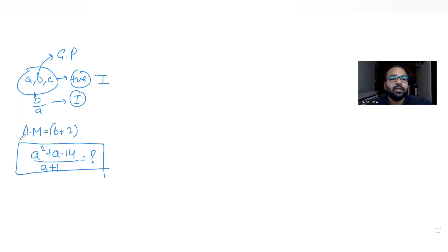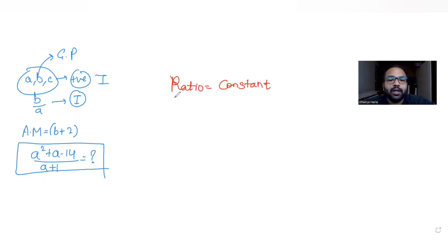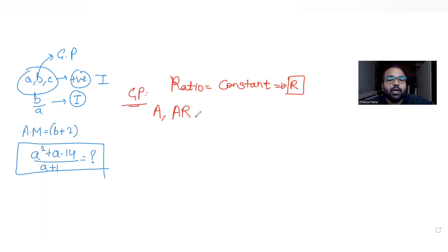Let's understand the concept first. We say that terms are in geometric progression when the ratio between consecutive terms is a constant value. If the first term is a and the common ratio is r, then the second term is a·r, the third term is a·r², the fourth term is a·r³, and so on.